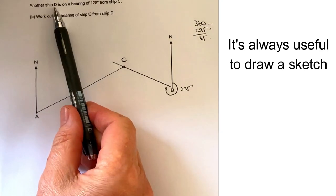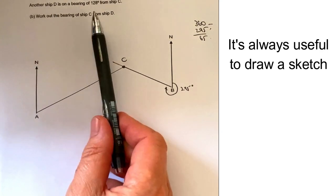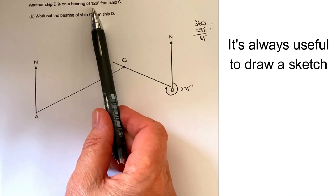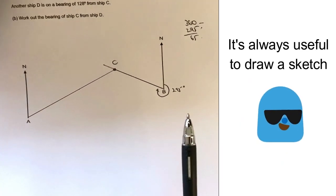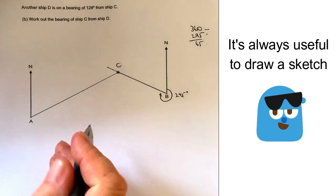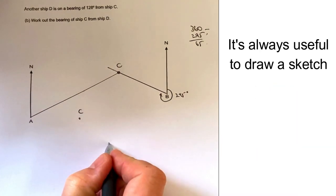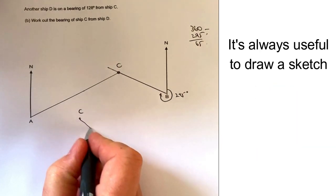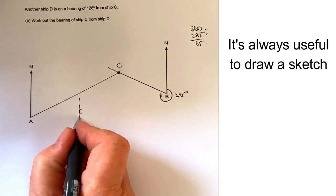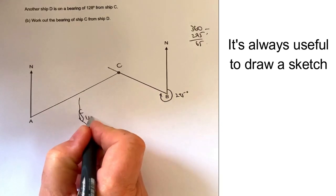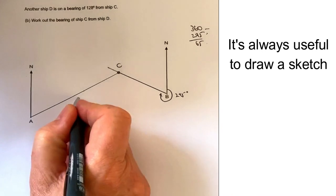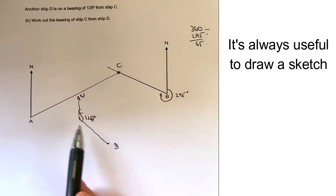If that is the case, I'm just going to draw a very quick sketch. Here's C and here's D which is on a bearing of 128 degrees. So this is 128 degrees, and what they're asking us to do is to work out the bearing of C from D.